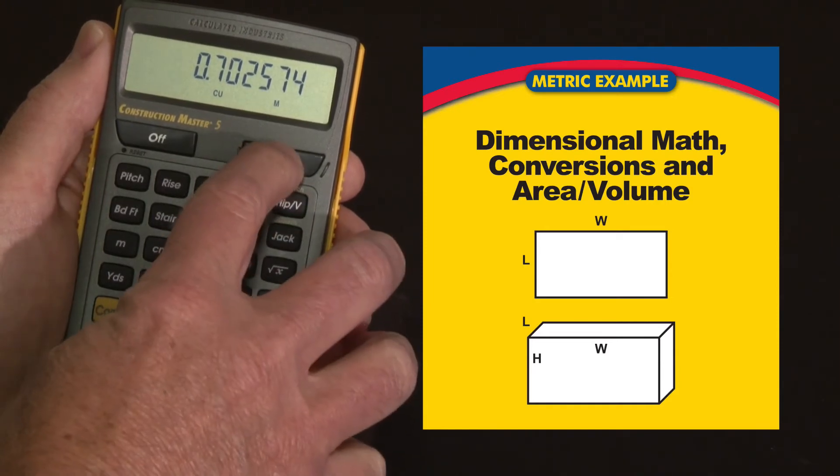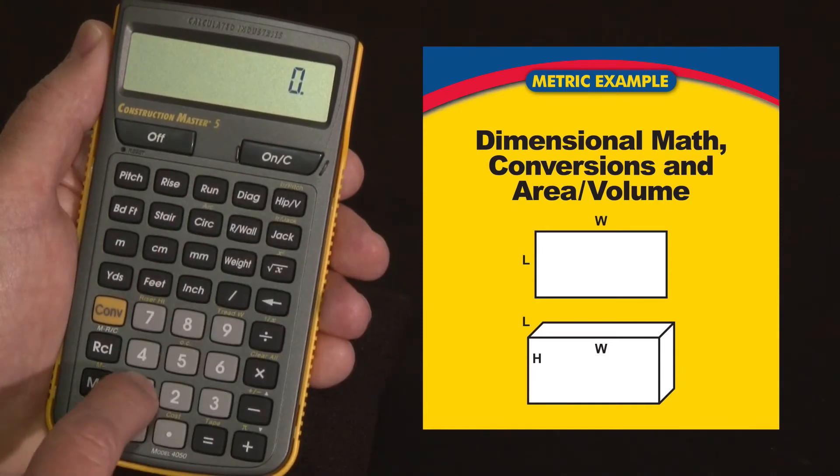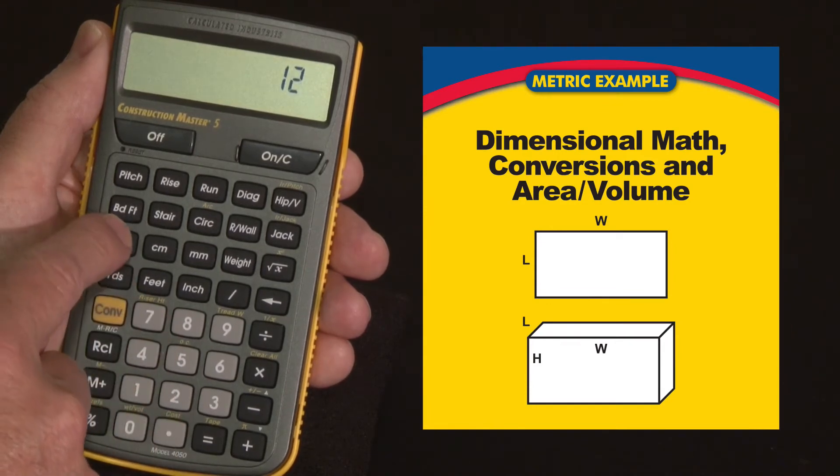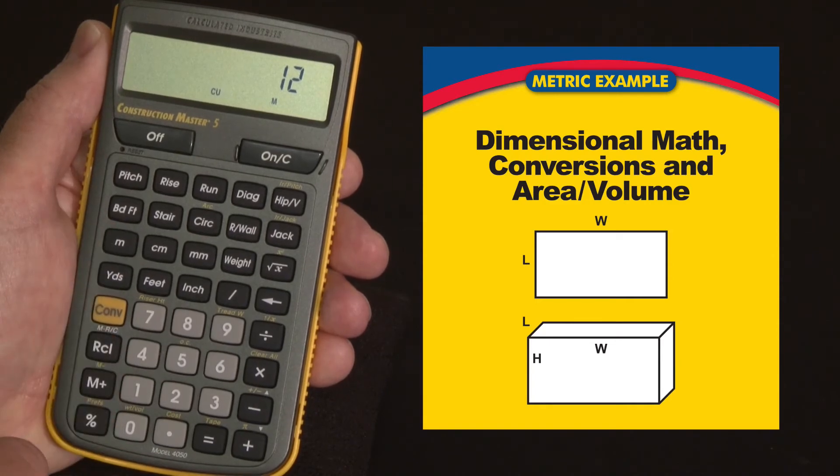You can also directly enter square and cubic values. Let's say 12, press meter once - it says meter for linear, press it again - it's square meters, press it again - it's cubic meters.